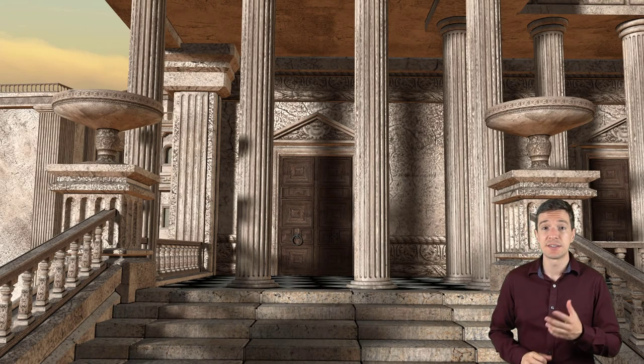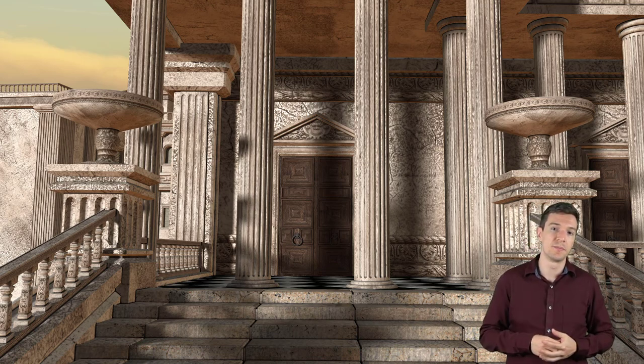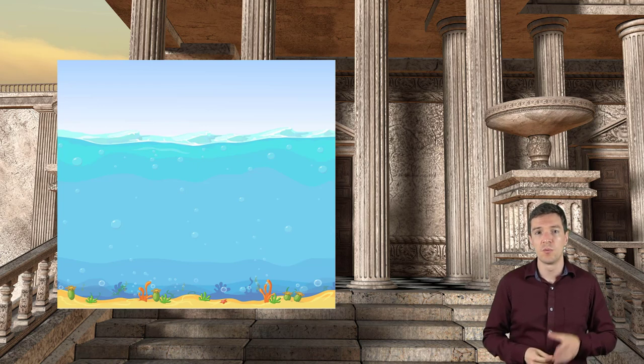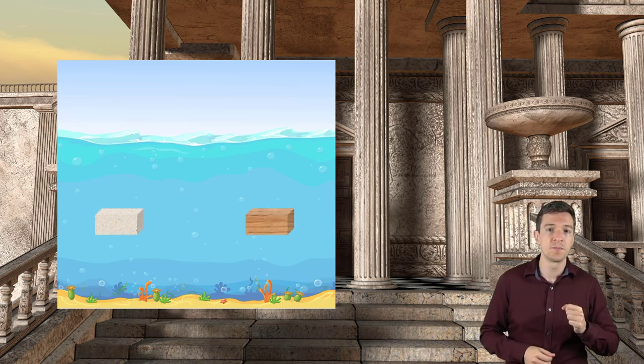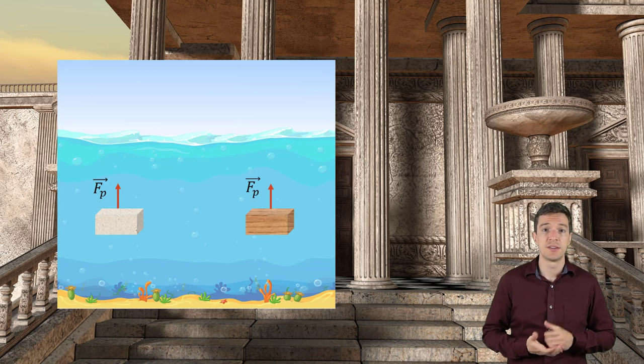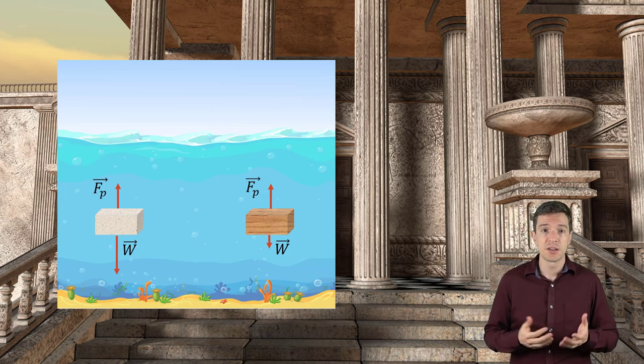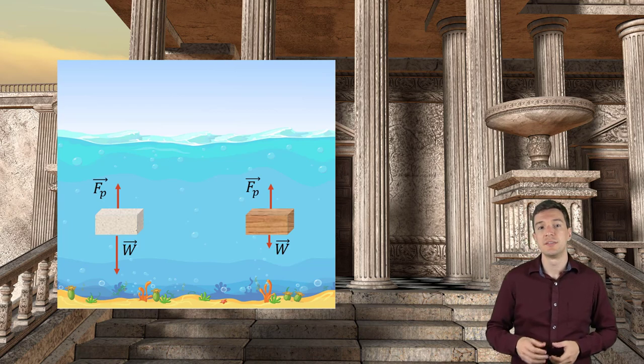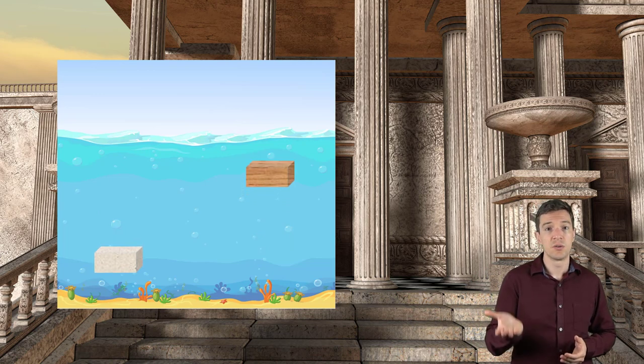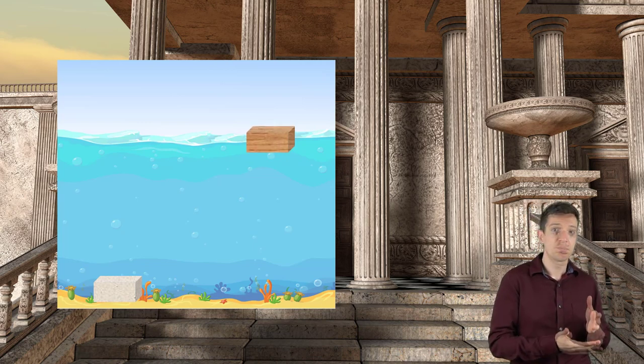A direct consequence of this principle is buoyancy. Why does a body float or sink in a fluid? Assume that we have two bodies at the same height underwater with the same volume. One is wood and one is concrete. Both are subject to the same pressure force that will push them up. While, due to the difference in density, the two bodies will have a different weight. The direct consequence is that the concrete body will sink, while the wooden body will float. The concrete body has a negative buoyancy, while the wood has a positive buoyancy.